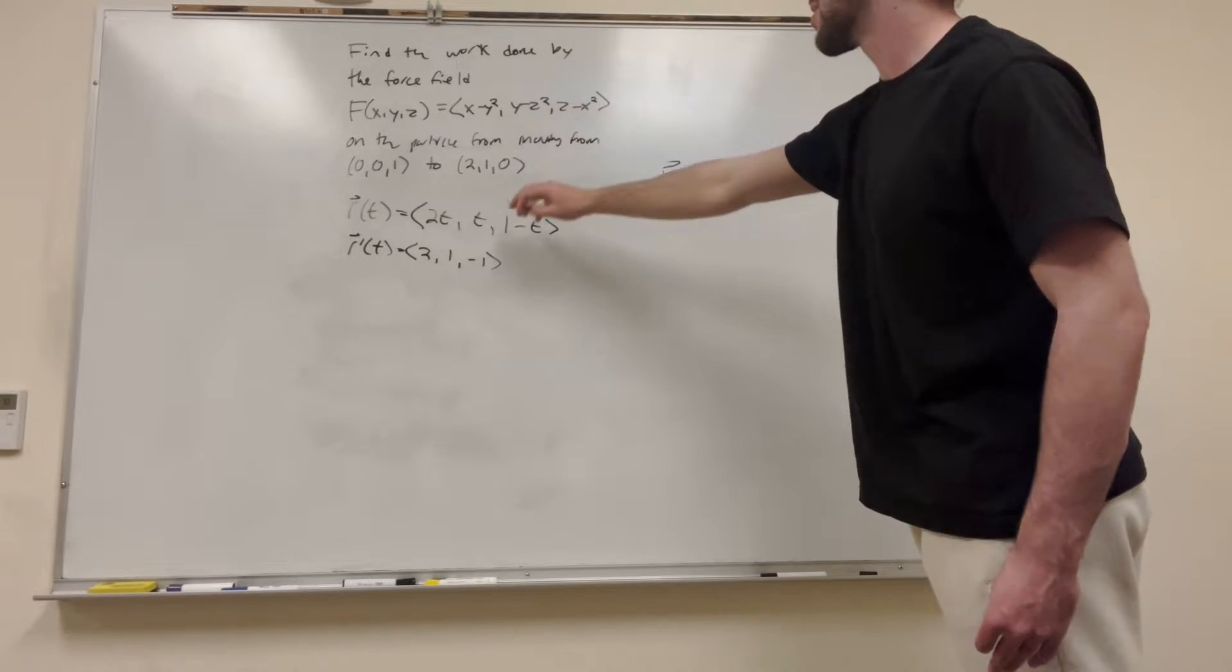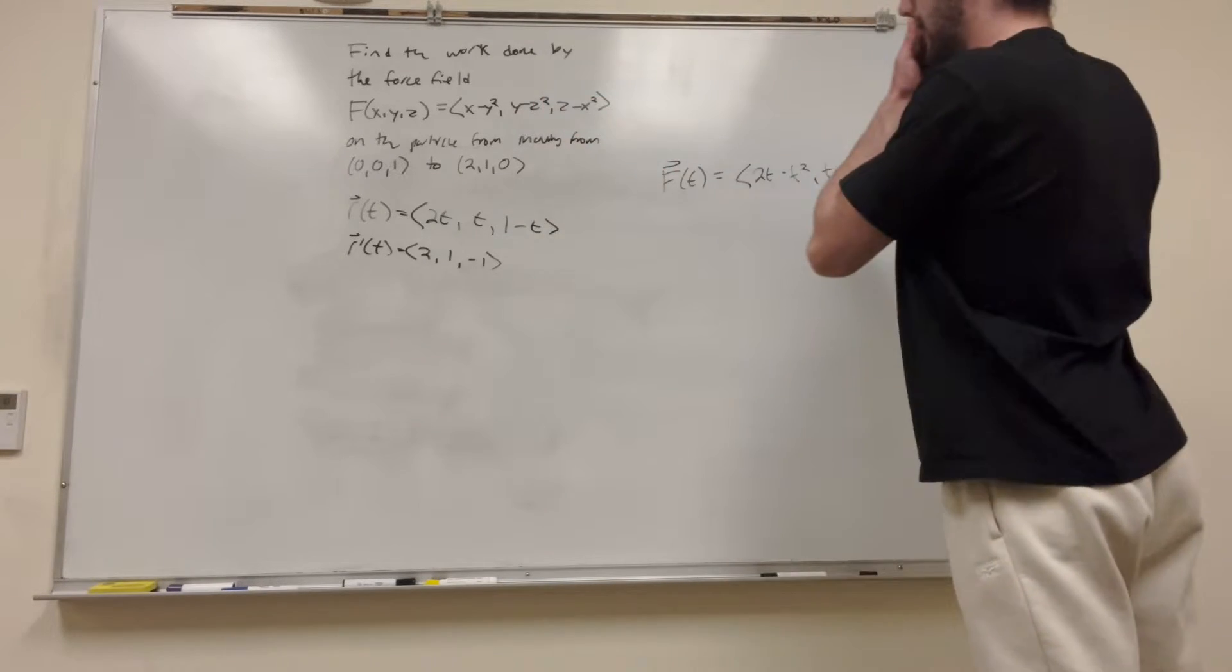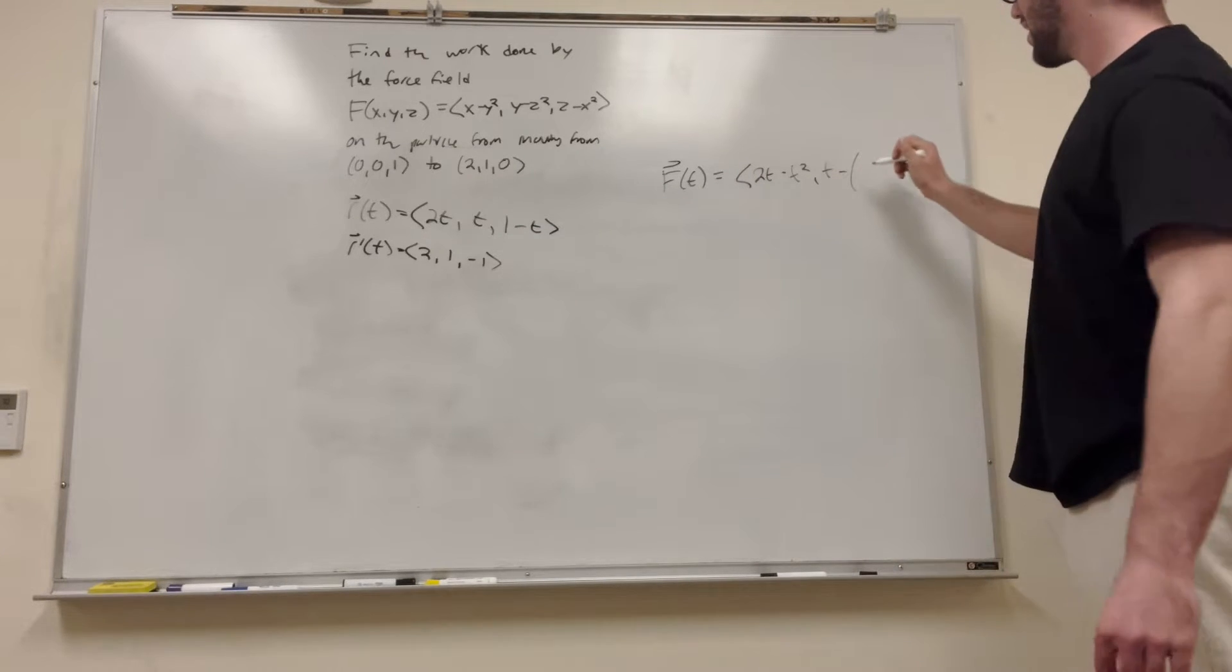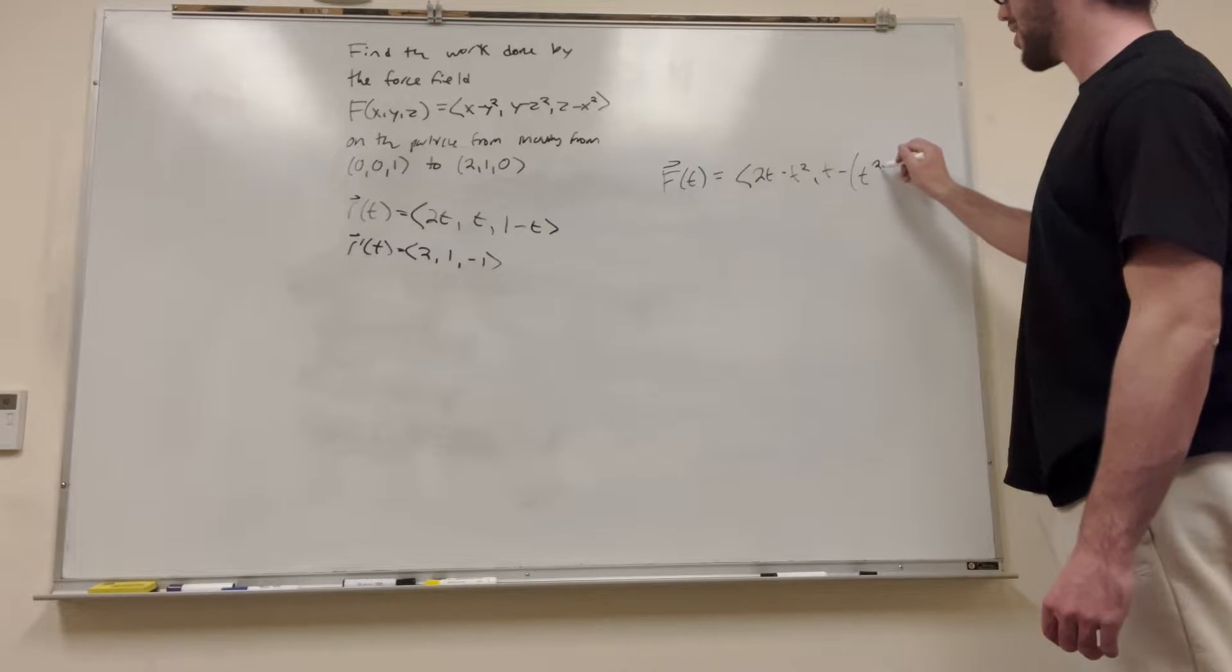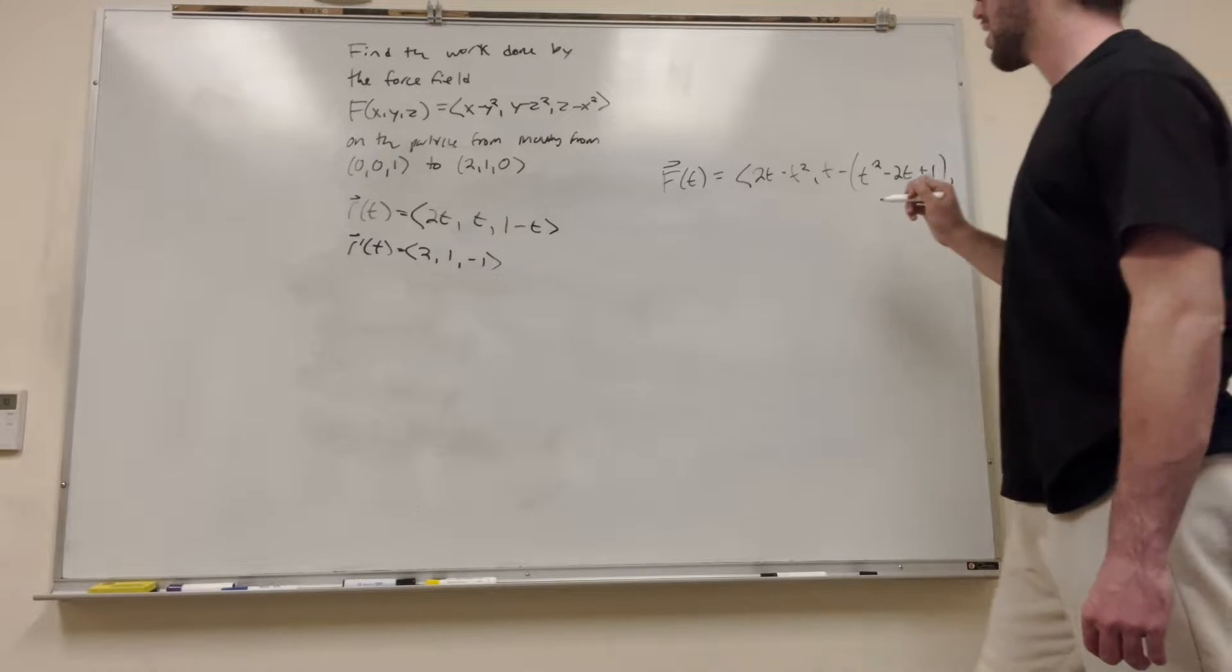T, or just y minus z squared, so it's going to be T, T minus. But then it's Z squared and Z, as you can see, it's two things, so you've got to FOIL that. So it's going to be T squared minus 2T plus 1.